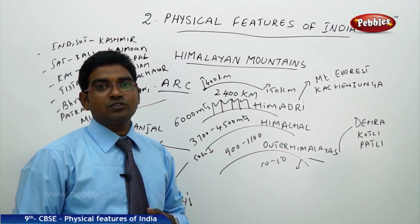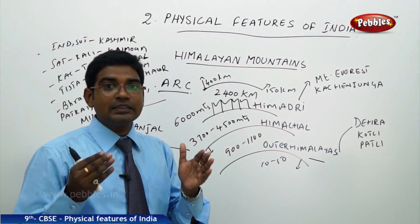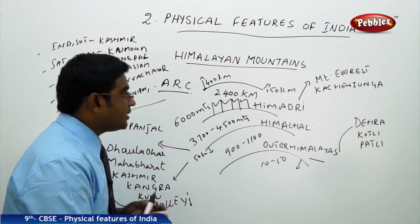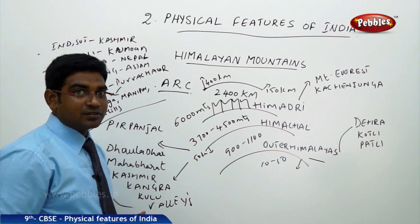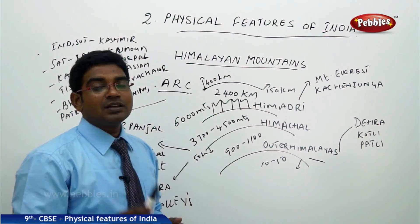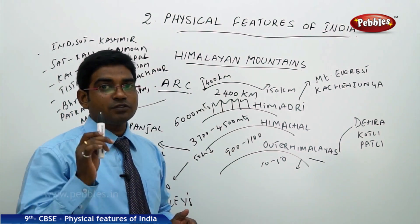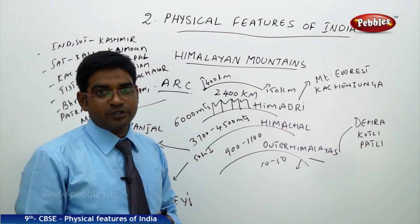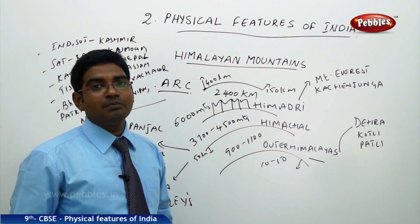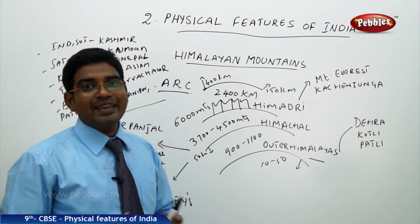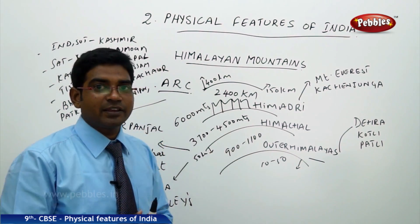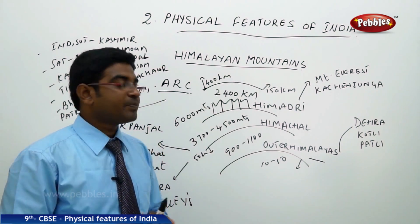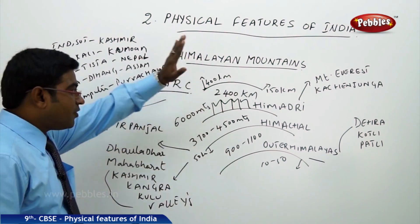The Himalayas consist of three major parallel mountain ranges. Together we call them the Himalayan Mountains, and they are broadly categorized into three major categories as per their parallel ranges.